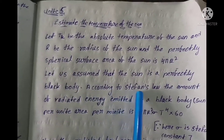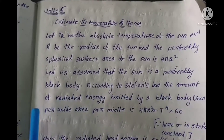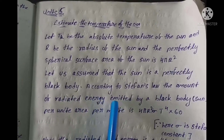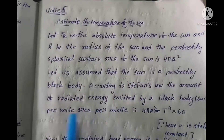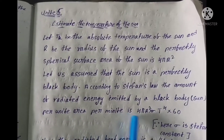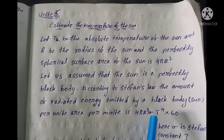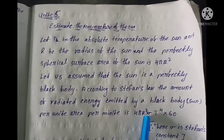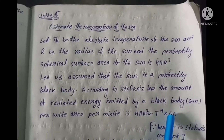According to Stefan's law, the amount of radiated heat energy emitted by a black body per unit area per minute is 4πR² × σT⁴ × 60.